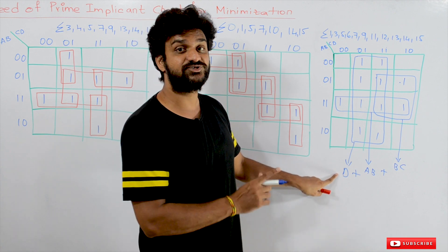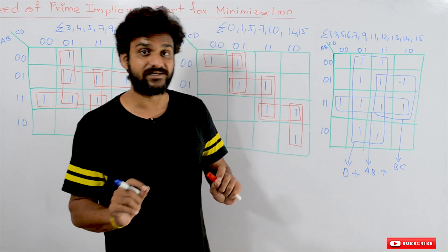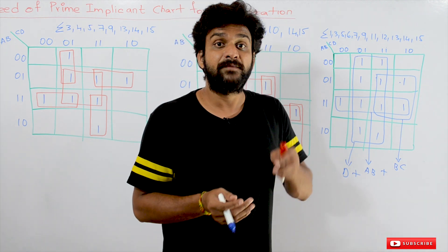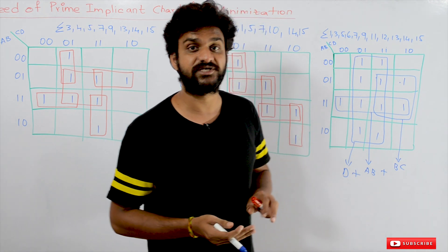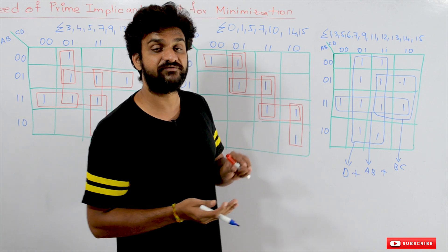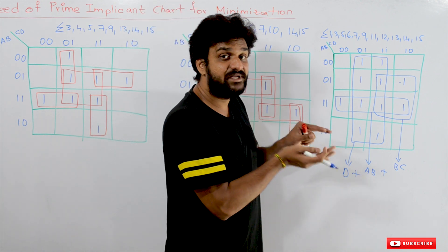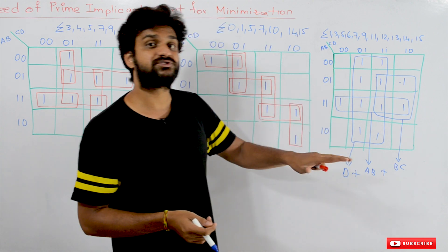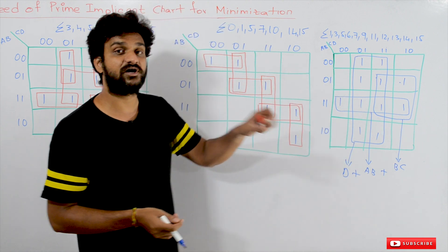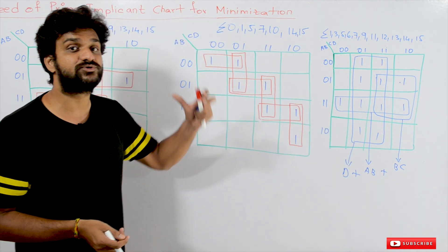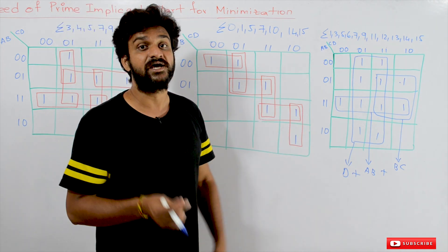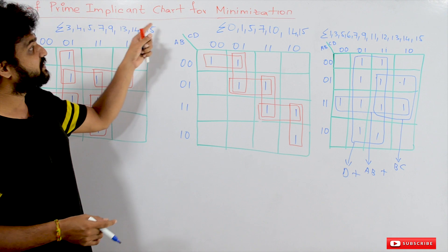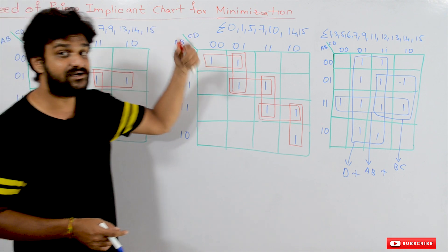But there are some cases where we are going to get multiple minimal solutions. In order to solve those kinds of Boolean expressions, there is a need for us to use a prime implicant chart.